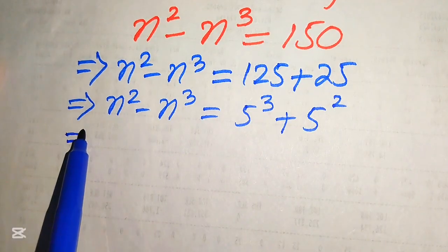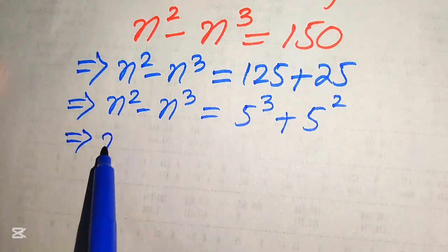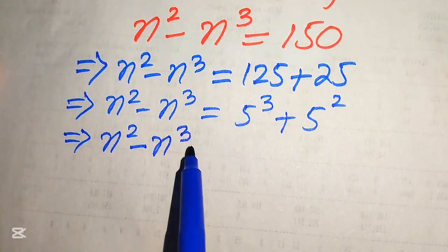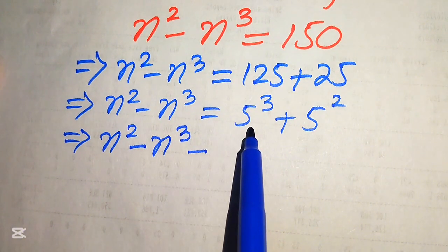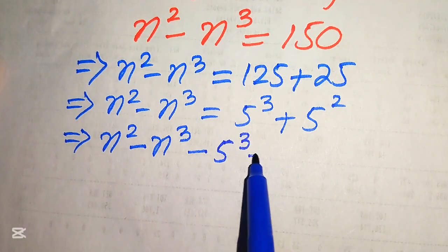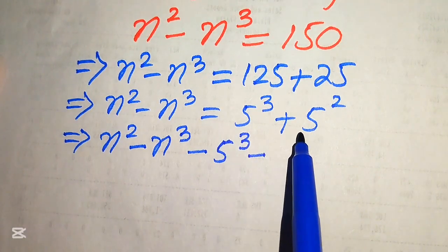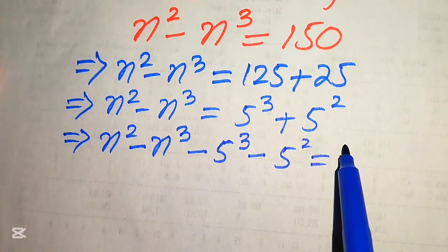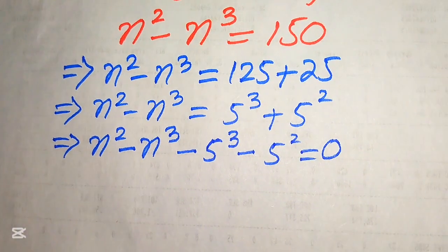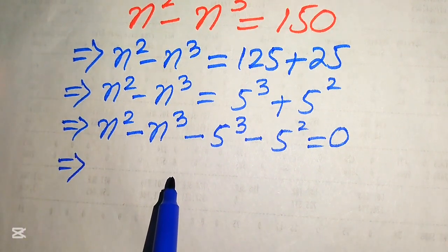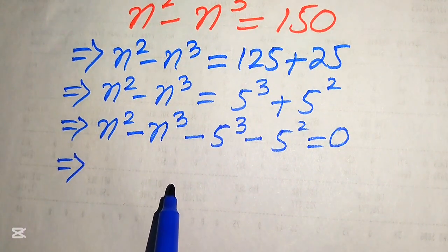In the next step, we move the terms from the right-hand side to the left-hand side. It becomes n squared minus n cubed plus 5 cubed, and when we move the plus 5 cubed to the left it becomes minus 5 cubed, and the plus 5 squared becomes minus 5 squared. This whole equation equals zero.